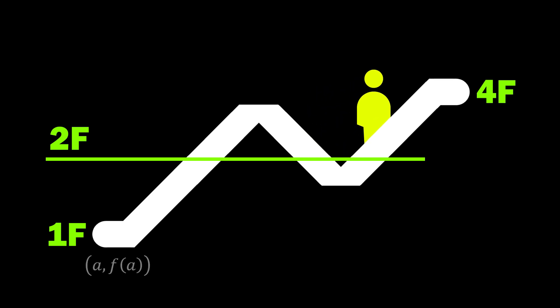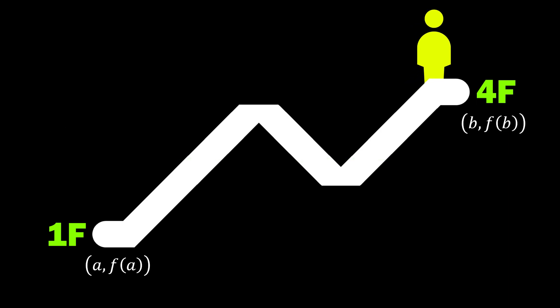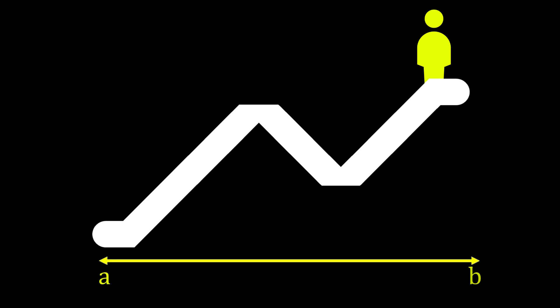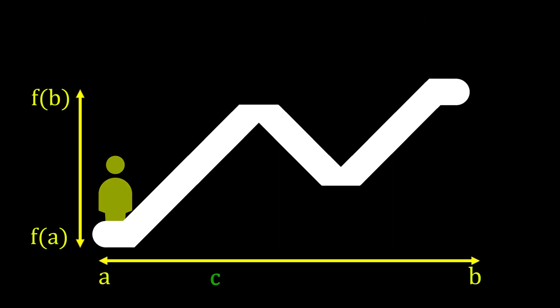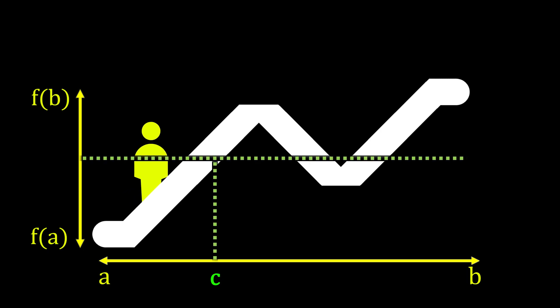If you consider the left starting position of the escalator as a comma f of a and the ending position as b comma f of b, then the escalator is horizontally connected from x equals a to x equals b. Its starting height is f of a and its ending height is f of b. In this scenario, if c is located between a and b, then the passenger on this escalator must necessarily pass through the height f of c at least once. This is precisely the essence of the intermediate value theorem.